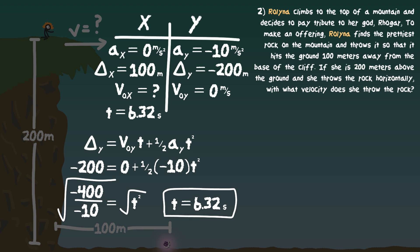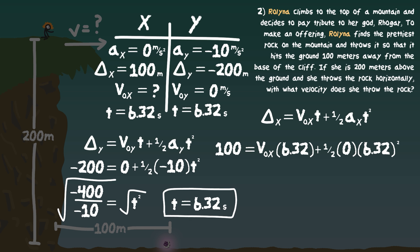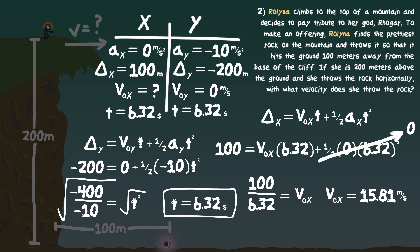Now we have three pieces of information in X — acceleration, displacement (100 m), and time (6.32 s) — so we can find the initial velocity in X. Using the same formula for X: 100 equals V-initial-X times 6.32 plus one-half times 0 times 6.32 squared. The acceleration term goes to zero, so 100 divided by 6.32 gives us an initial velocity of 15.81 meters per second.